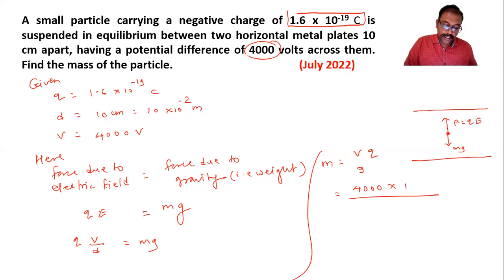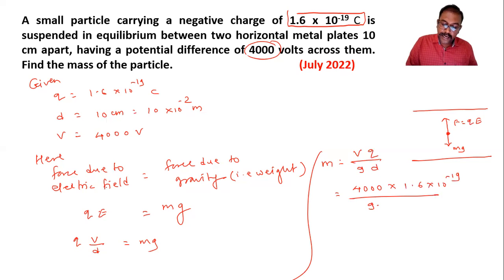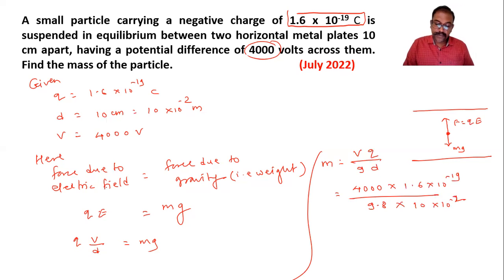Divided by g, which is 9.8, and d, which is 10 into 10 raise to minus 2. Now let's simplify this.